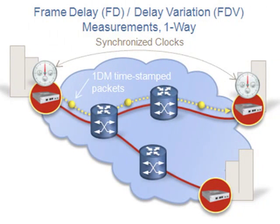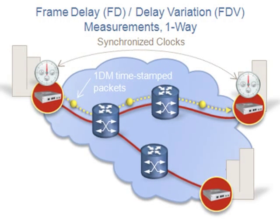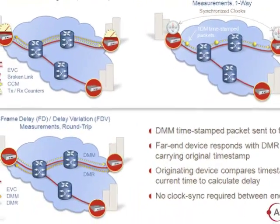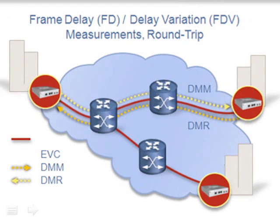Y.1731 also specifies techniques for both one-way and round-trip latency and jitter, also known as delay and delay variation. One-way latency measurements require that the service endpoints have synchronized reference clocks, while round-trip delay measurements do not. One-way delay is measured by sending a timestamp delay measurement test packet through the network to the far-end maintenance endpoint that compares the original timestamp to its current reference clock to calculate latency. Delay variation is defined as the difference in the timestamp of two subsequently received DM packets. Round-trip delay is measured by sending a delay measurement message, or DMM frame, whose timestamp is returned to the originating node in a delay measurement reply frame. The originating MEP then uses the difference between the current clock and the transmission timestamp to calculate round-trip two-way delay.